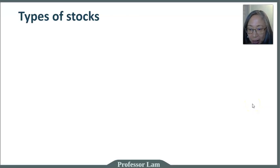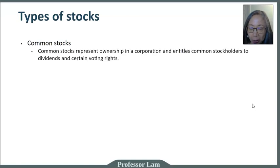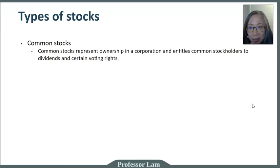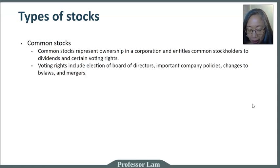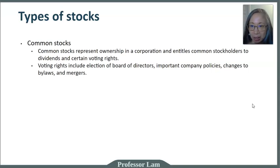First, let's take a look at different types of stocks. Common stock, as the name implies, is the most common. Common stock represents ownership in a firm, and as an owner or shareholder, you are entitled to certain rights. One of those rights is to receive dividends. Other rights may include voting on important company decisions, such as electing the board of directors and deciding on important company policies like changing the bylaws. Each company can have their own bylaws, which can be very different from company to company. Voting rights also apply to important decisions such as mergers and acquisitions.